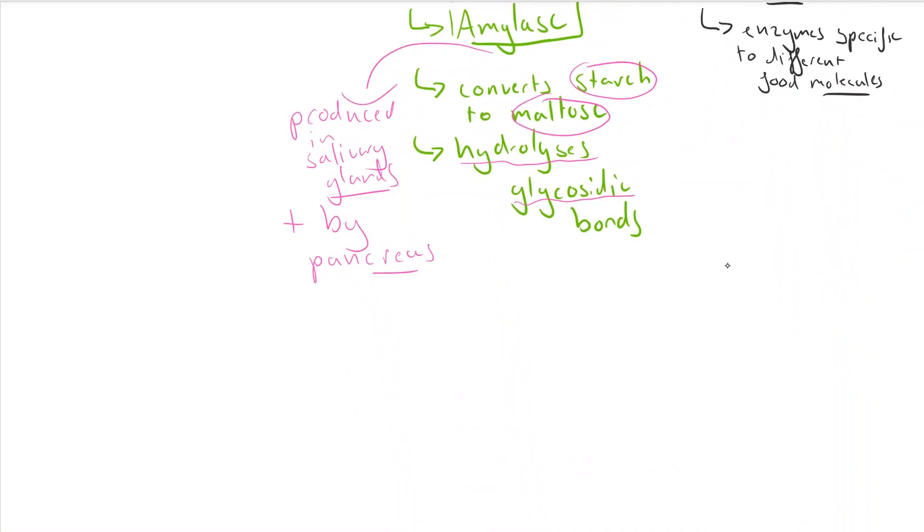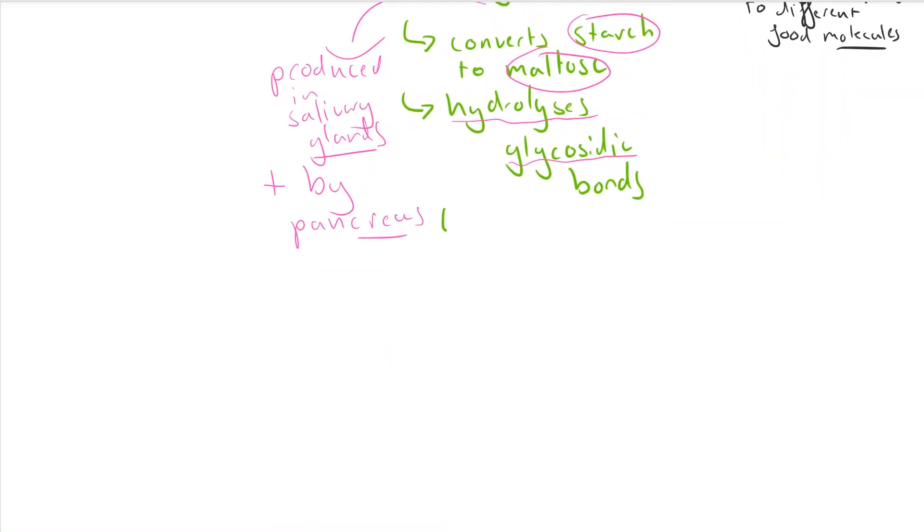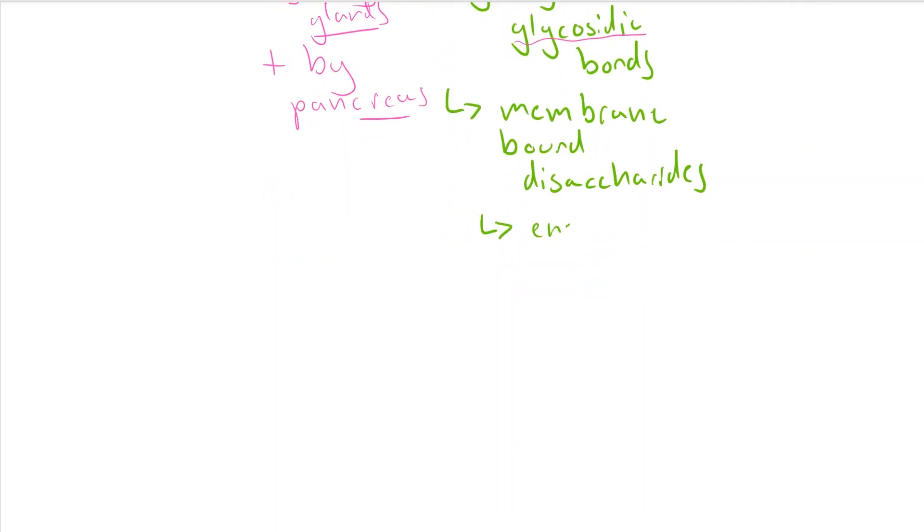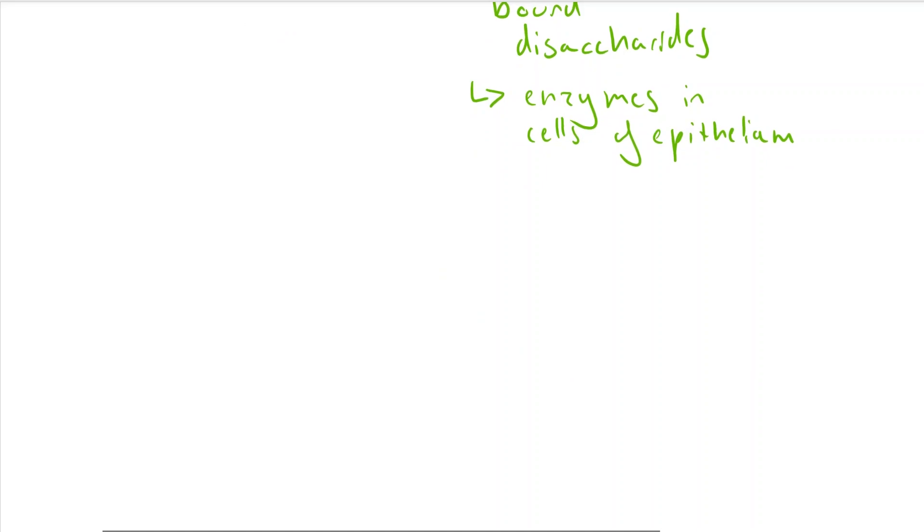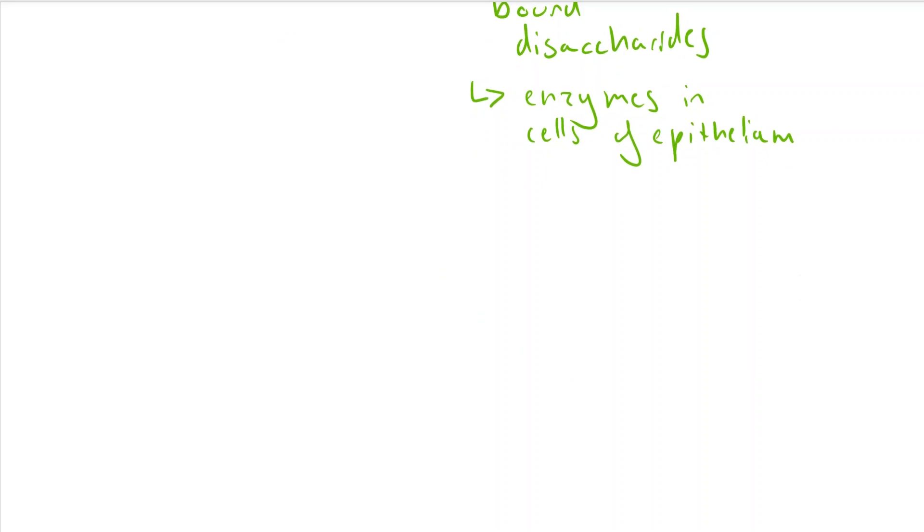You also need to know about membrane-bound disaccharidases, which are enzymes found in the cell membranes of the epithelial cells in the ileum—the final part of the small intestine. These help break down disaccharides. It's easy to remember: disaccharidases breaks down disaccharides.